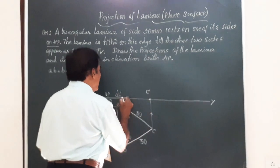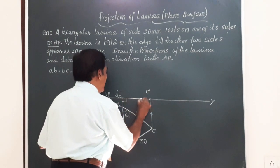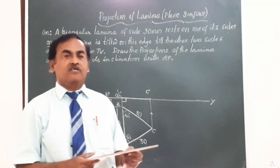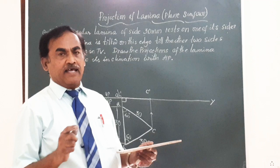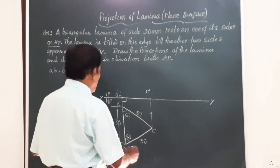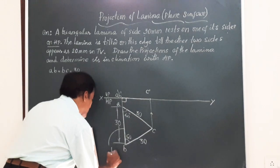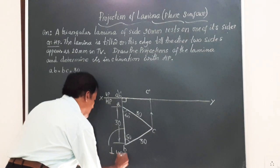So if you join A dash, B dash to C dash, this line A dash, B dash, C dash represents the front view of the lamina when it is resting on HP, with one of the side AB normal to VP or perpendicular to VP.